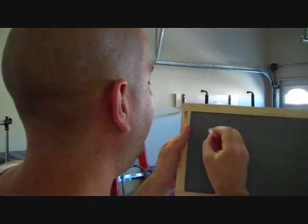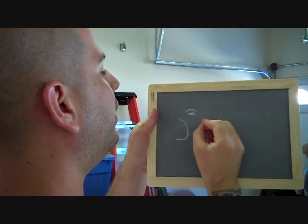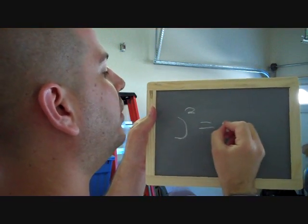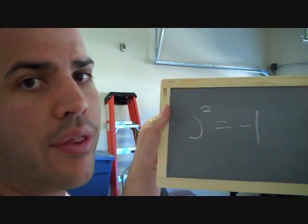What's up everyone? I'm going to be discussing — and solving — the imaginary unit equation. What the imaginary unit equation is, is this: j squared equals negative 1. That's the imaginary unit equation.